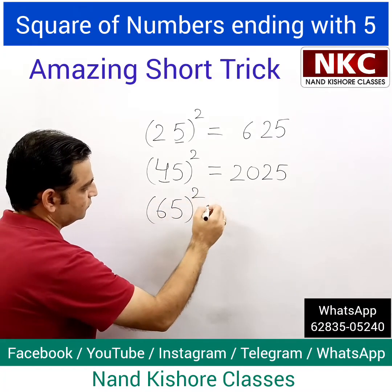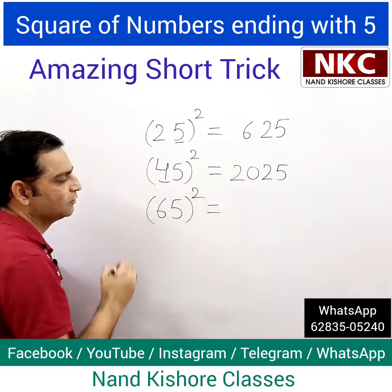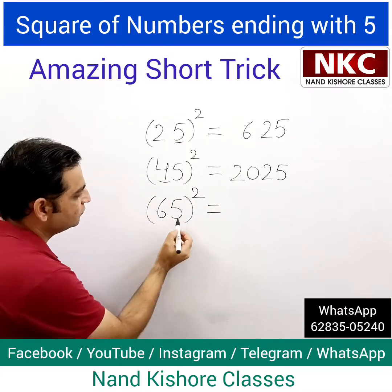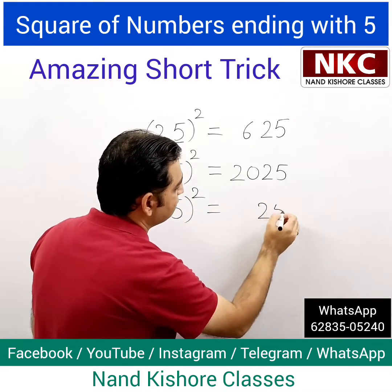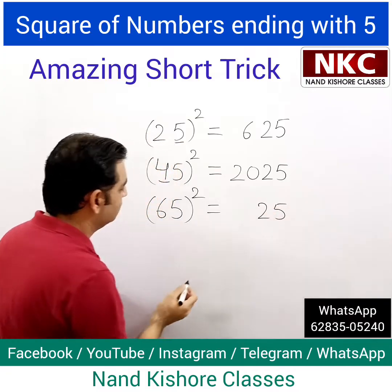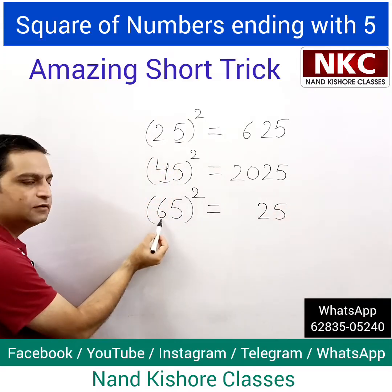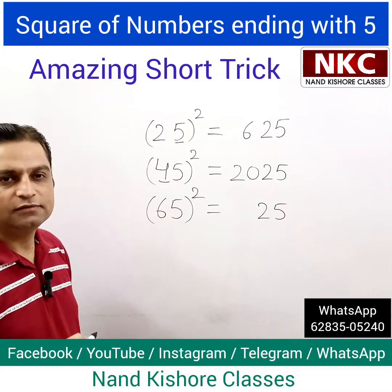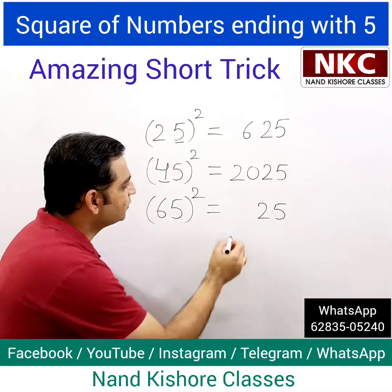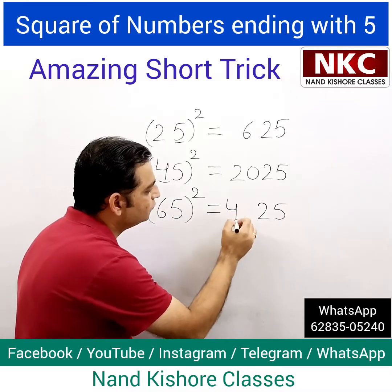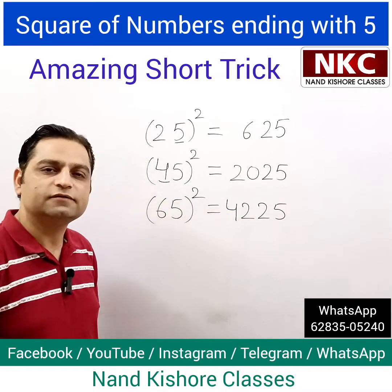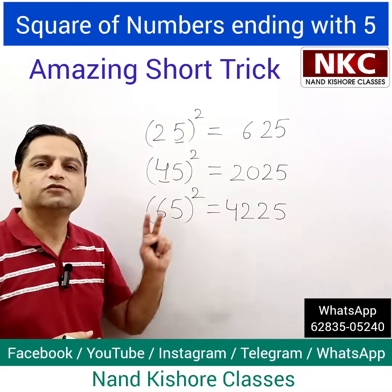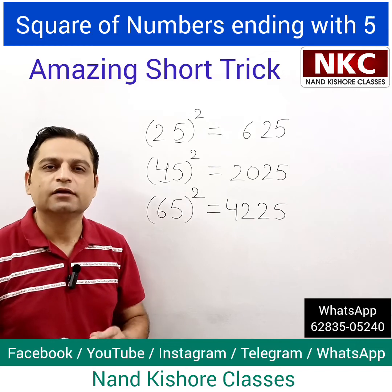Check one more: 65 squared. 5 squared is 25, and this 6 should be multiplied with the next value, which is 7. 6 times 7 is 42, so the answer is 4225. How easy this method is to apply!